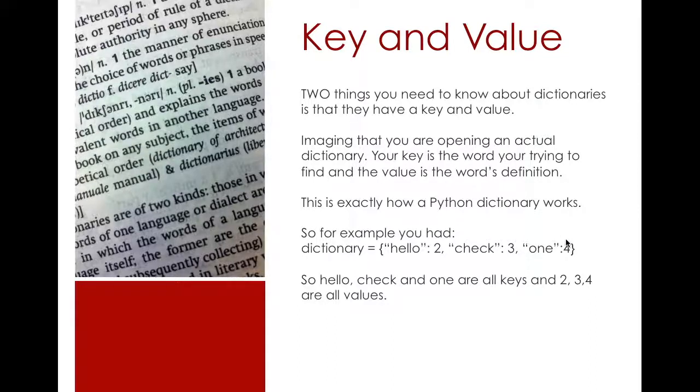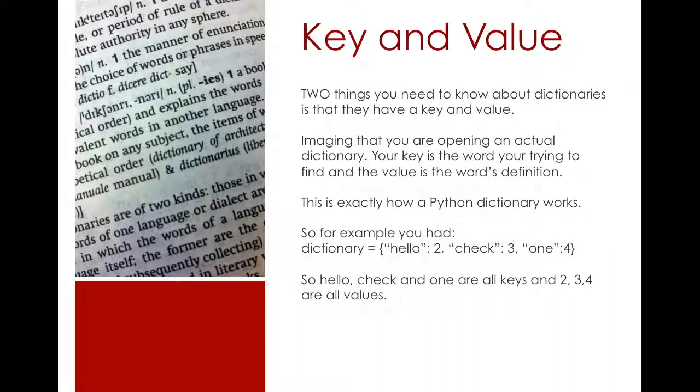You can access a dictionary and it's actually easy to do. For example, you have the variable search with Mercury, Venus, and Earth, which are all keys, and they each have a value representing their position in our solar system.